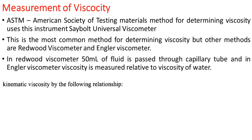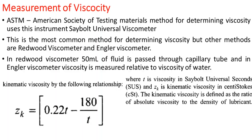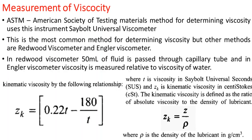To convert Saybolt Universal Seconds to kinematic viscosity, the formula is: ZK = 0.22T − 180/T, where T is the viscosity in Saybolt Universal Seconds (SUS) and ZK is the kinematic viscosity in centistokes (CST). Kinematic viscosity is the ratio of absolute viscosity to the density of the lubricant, where rho is the density in grams per centimeter cubed. You substitute T into the formula to get ZK, then use ZK and density to find kinematic viscosity Z.